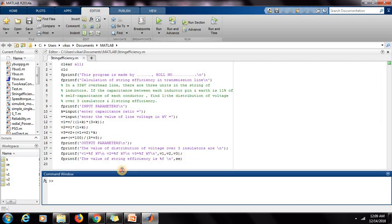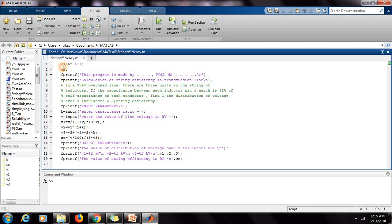First, I have to tell you in short about the MATLAB formula. This clear all command is for clearing all the variables, then clc for clearing the screen. Then this fprintf command is given for writing some text. I have mentioned that text: this program is made by so-and-so, roll number so-and-so. Then this is the title of the program: calculation of efficiency in string efficiency in transmission line. And this is the exact numerical which we want to solve. Then we will give some input.